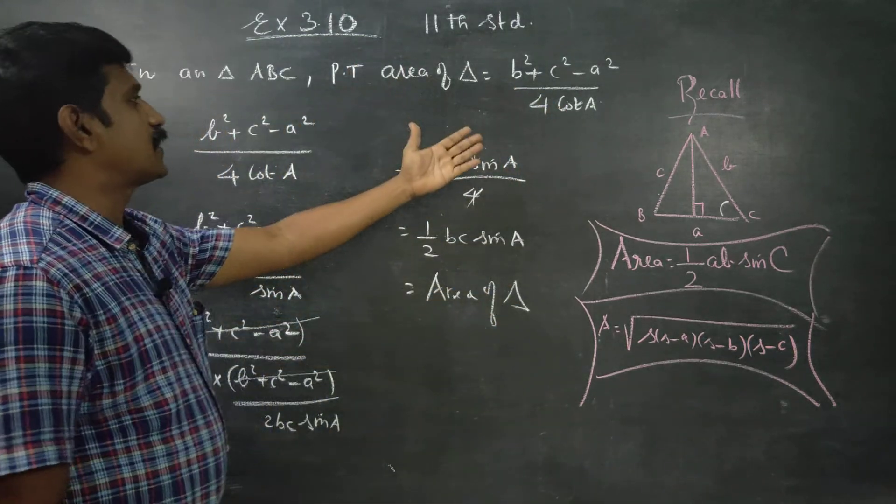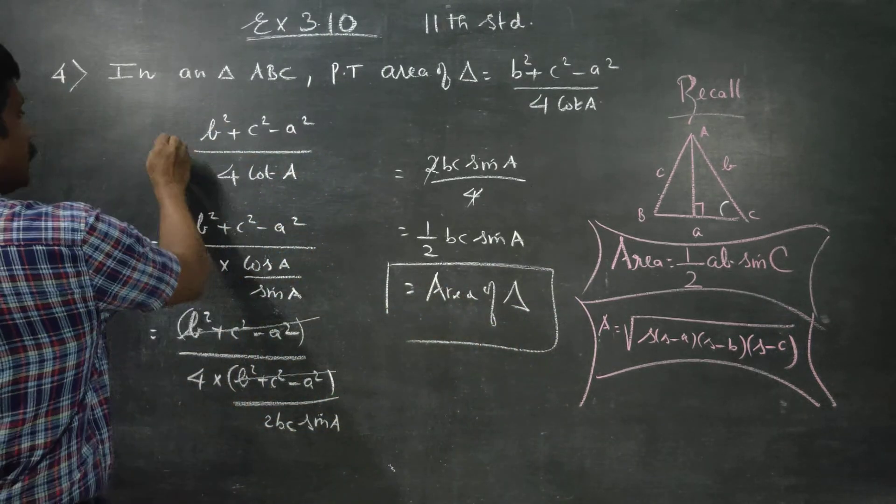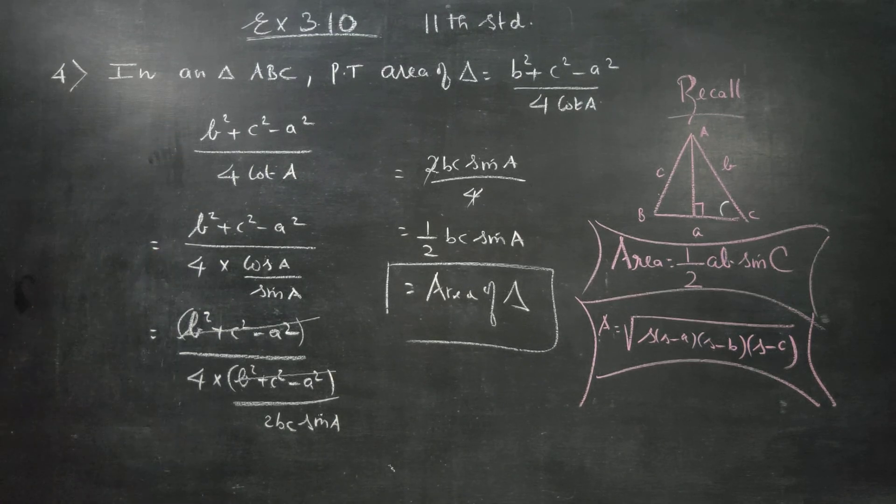I have finished my area of triangle. Therefore, my area of triangle is b square plus c square minus a square by 4 cot a. This is my final answer. Thank you.